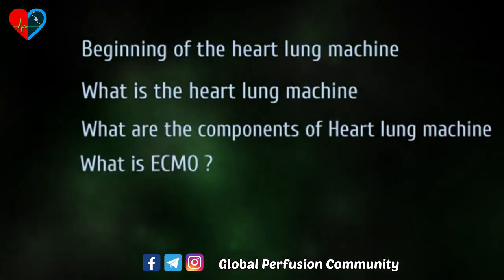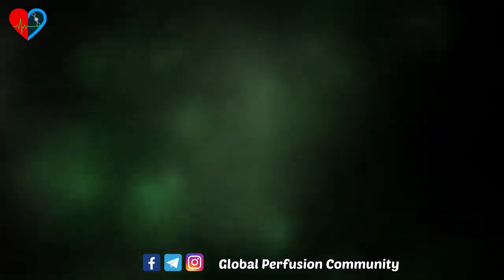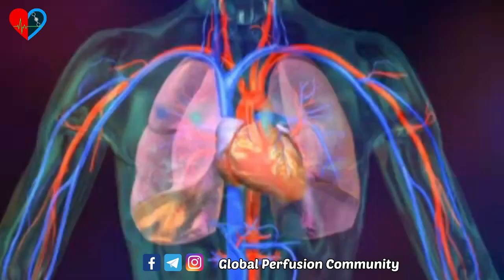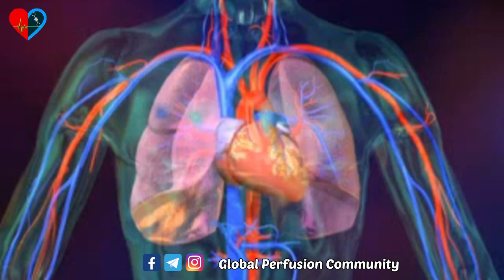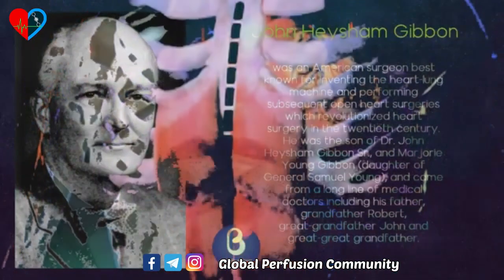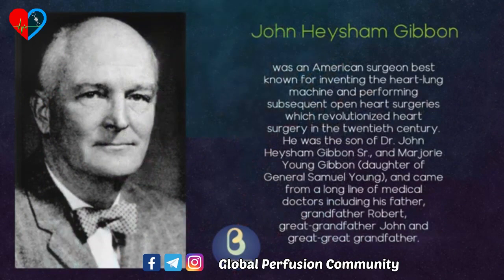Let's start the video with the beginning of the heart lung machine. Like many medical advances, the development of the heart lung machine depended heavily on animal research. In 1931, John Gibbon had been moved by the death of a patient during cardiac surgery, convinced the patient would have survived if their blood circulation had been artificially maintained.